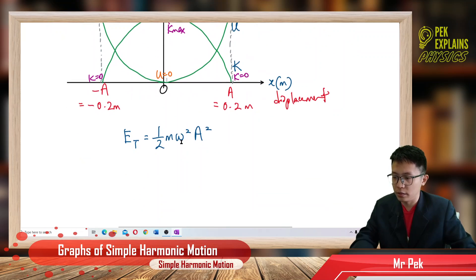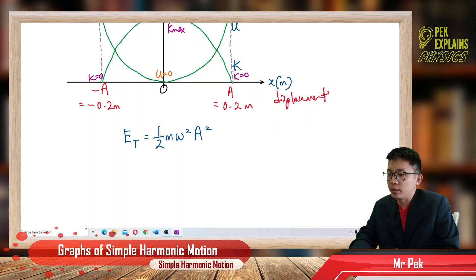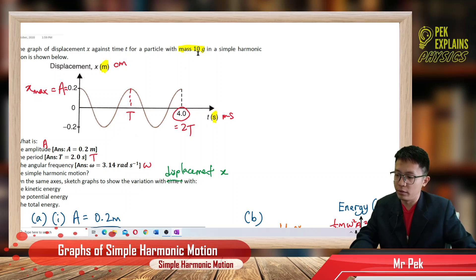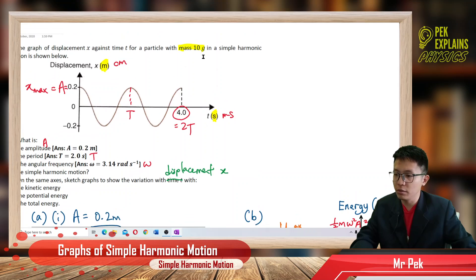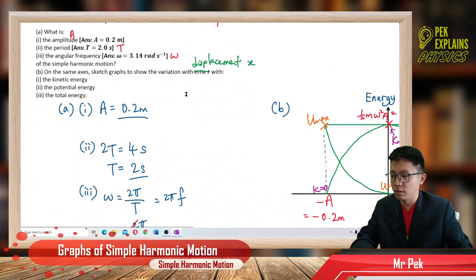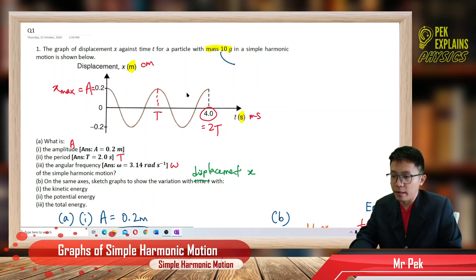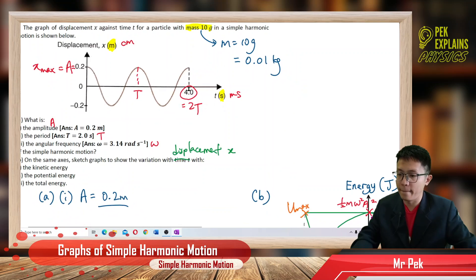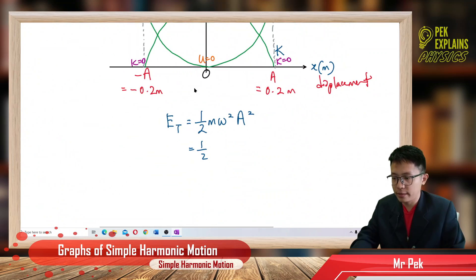To find the total energy, we use ½mω²A². We have mass = 10 grams, but we need to convert to kilograms — divide by 1000 — so mass = 0.01 kg. Our omega is π, or 3.14 radians per second. Our amplitude is 0.2 meters, which is already in SI units.